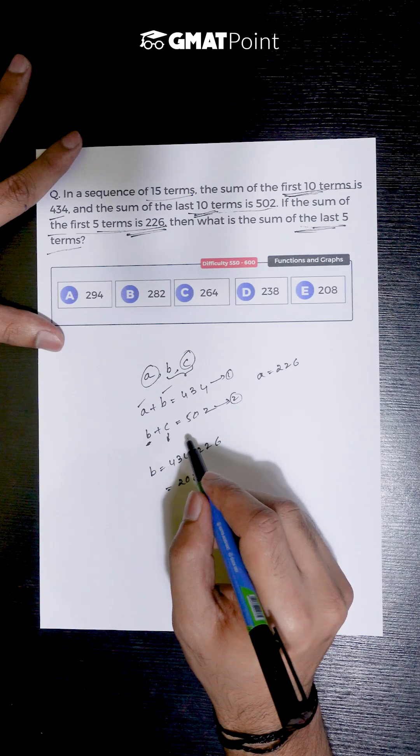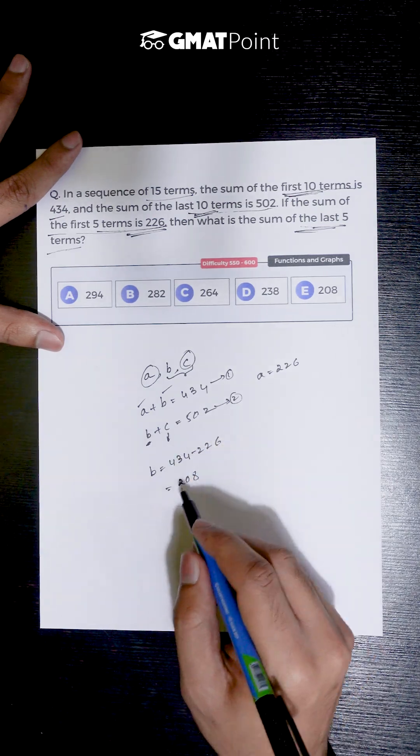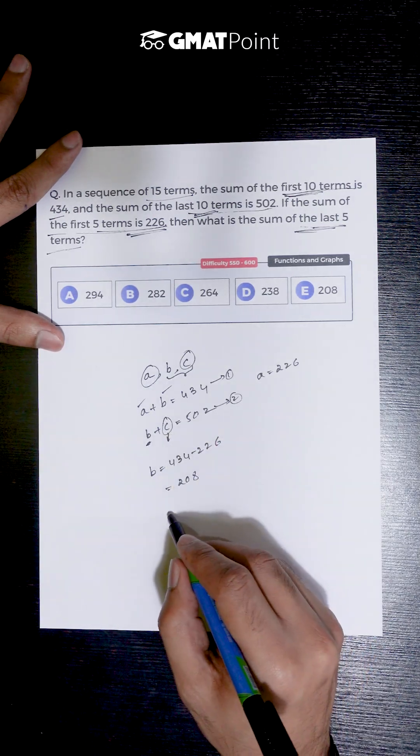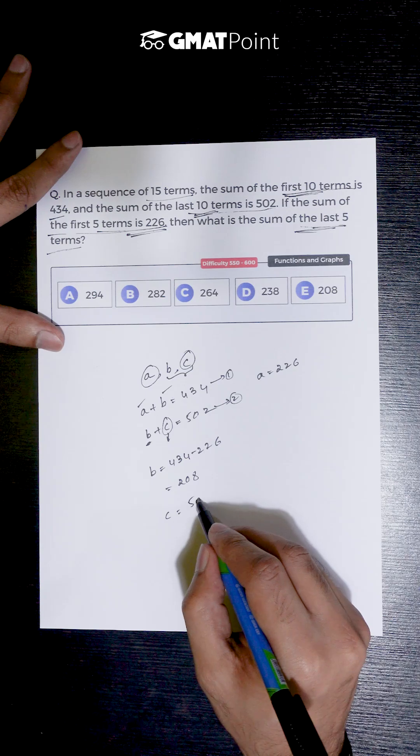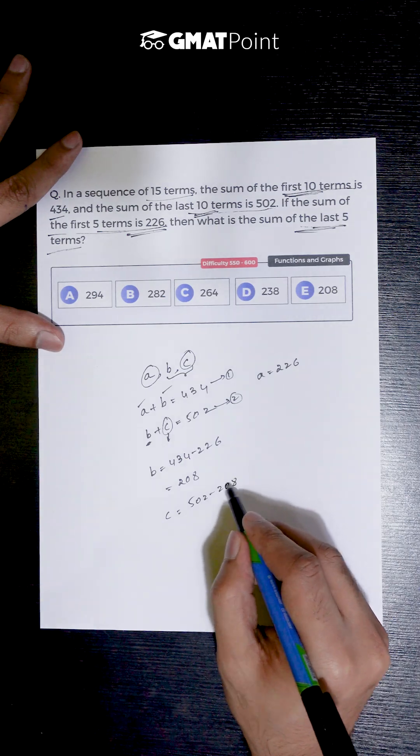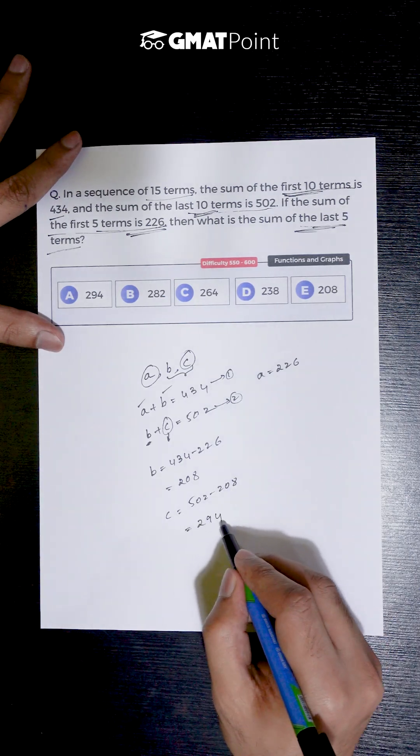Now that we know the value of b, let us try to substitute it in equation 2 to obtain the value of c. We get the value of c to be 502 minus 208, which is nothing but 294.